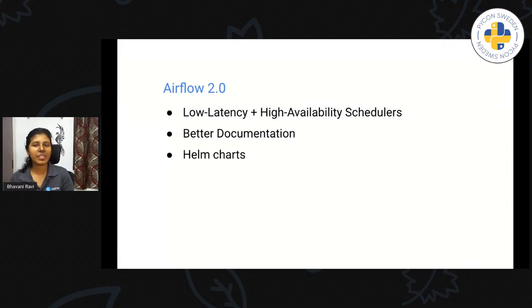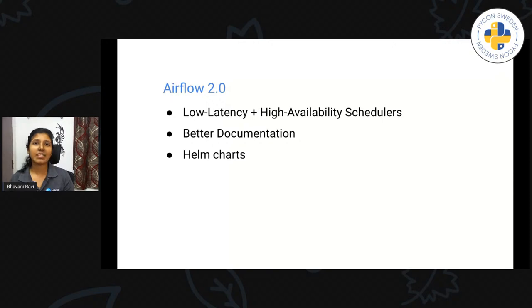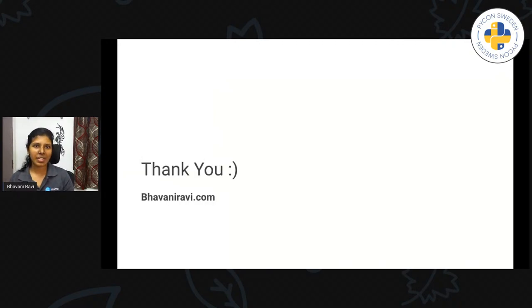Some of these pain points are changing in Airflow 2.0 — that's the promise we're getting. We are getting very low latency, high availability schedulers, and of course way better documentation. They are providing Helm charts, and you can define all the workerslots directly from YAML. So there is a lot of hope for Airflow 2.0 to actually change the way you run your everyday tasks and automate your everyday workflows. Thank you for joining. If you have any questions, I'd be happy to answer them. If you want to look at all my Airflow work, you can refer to some of my blogs at bhavaniravi.com.